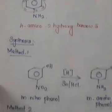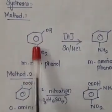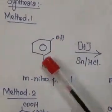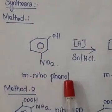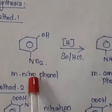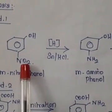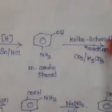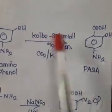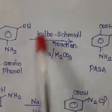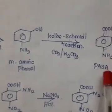Now we will see two methods to synthesize PASA. In the first method, the starting material is meta-nitrophenol — phenol with a nitro group at the meta position. Meta-nitrophenol undergoes reduction, converting the nitro group to an amino group. The second step is carboxylation by the Kolbe-Schmitt reaction, a named reaction used for introduction of a -CO2 group.